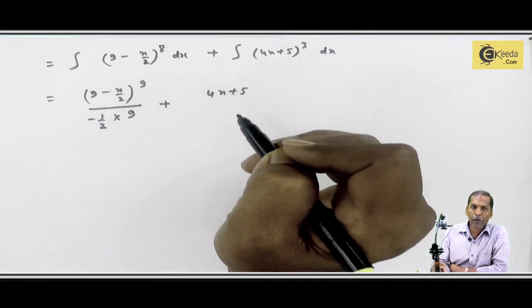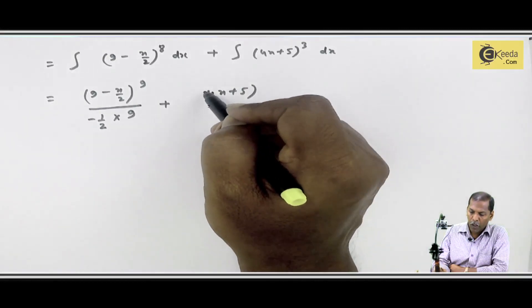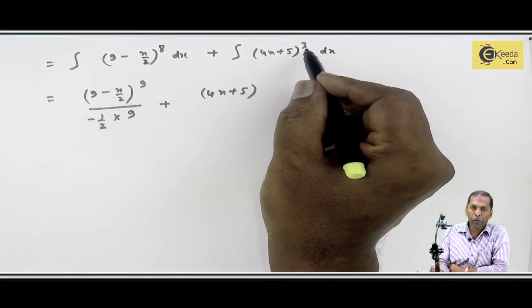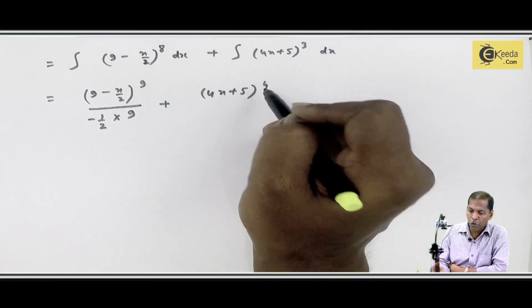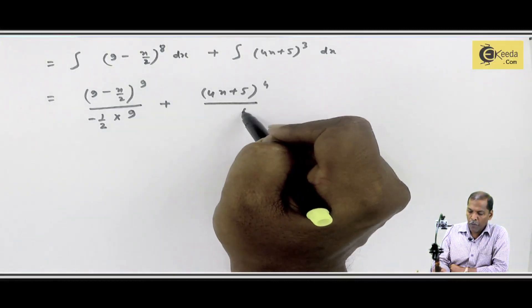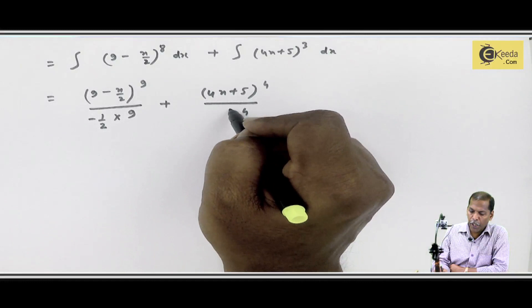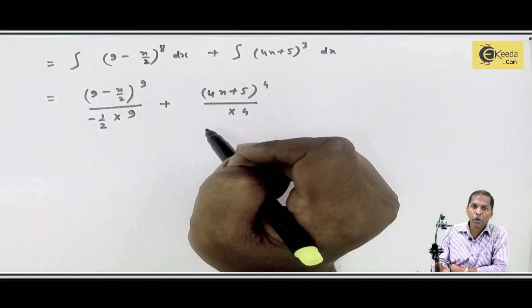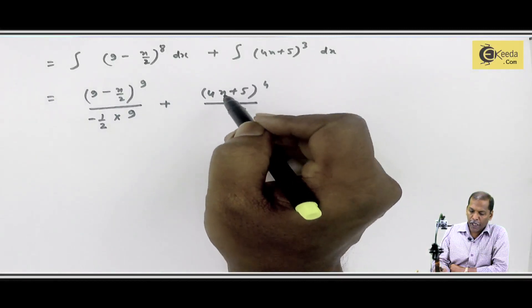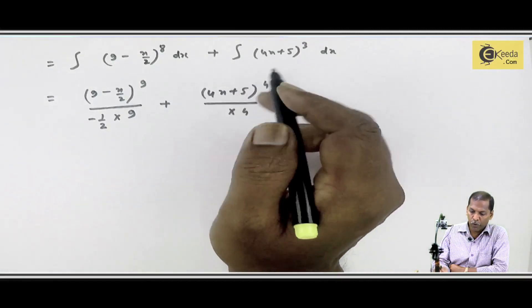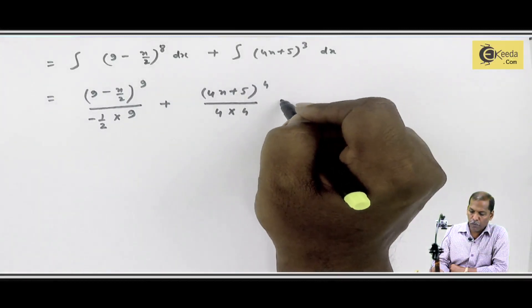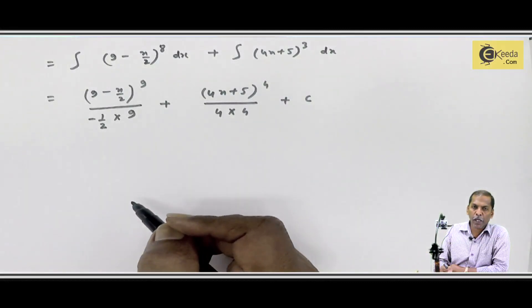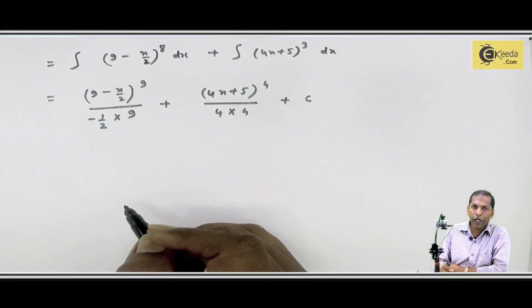4x plus 5, bracket raised to power - what is the power? 3, so 3 plus 1 gives total 4, upon 4. Now what remains? Into, in denominator x's coefficient should come. Now here x's coefficient is 4, so into 4. Plus next is c. So what does c represent? Constant of integration